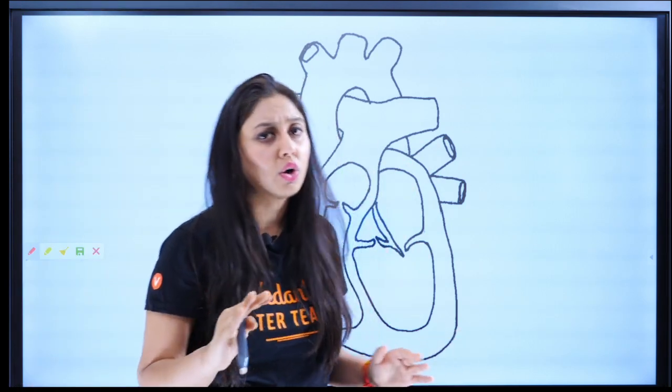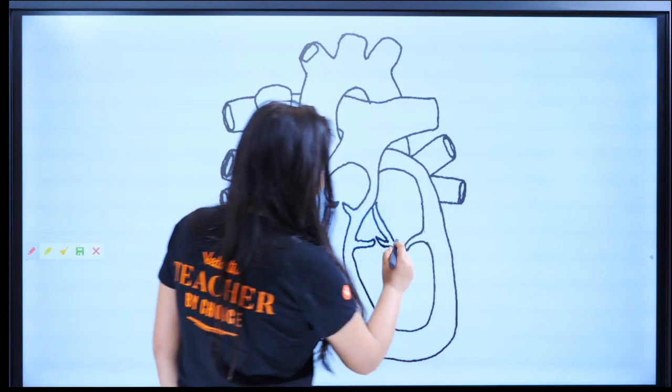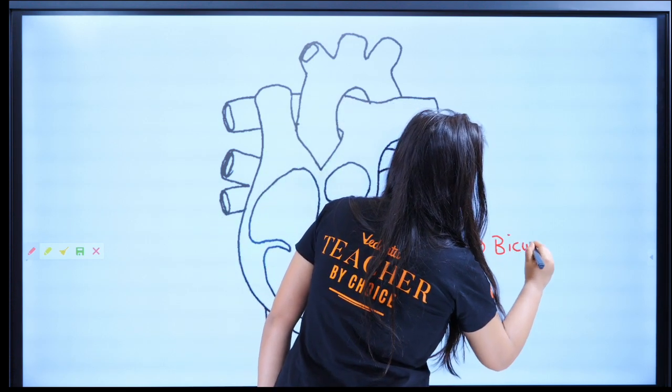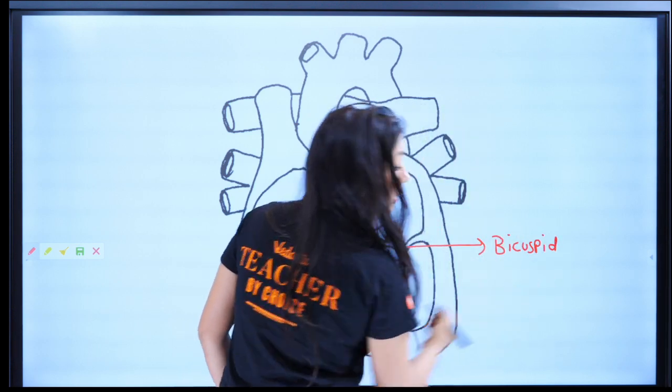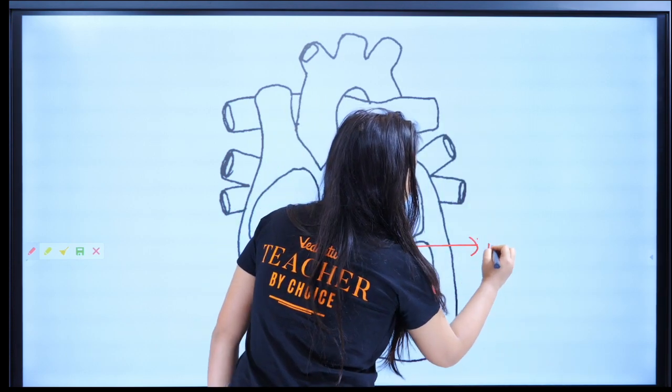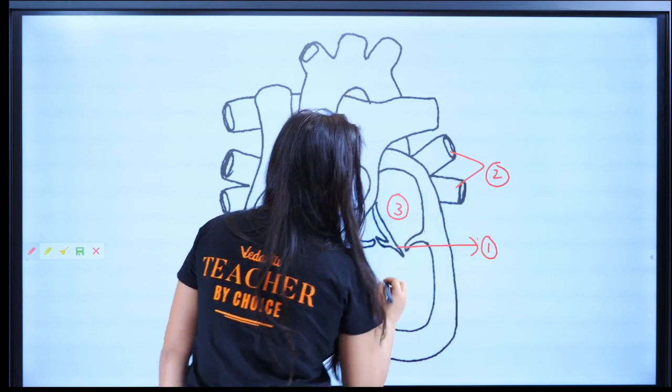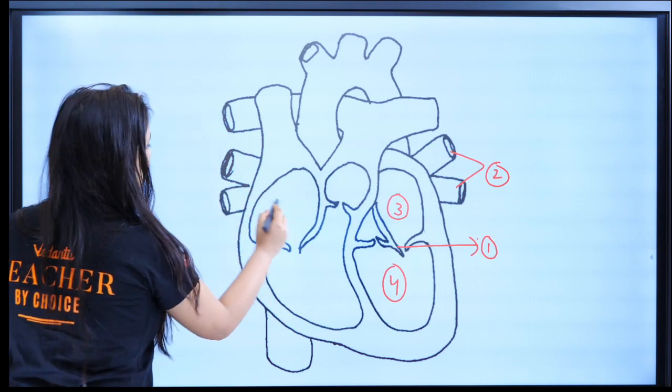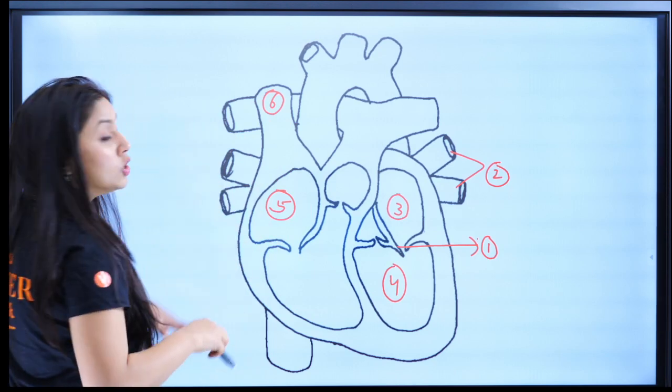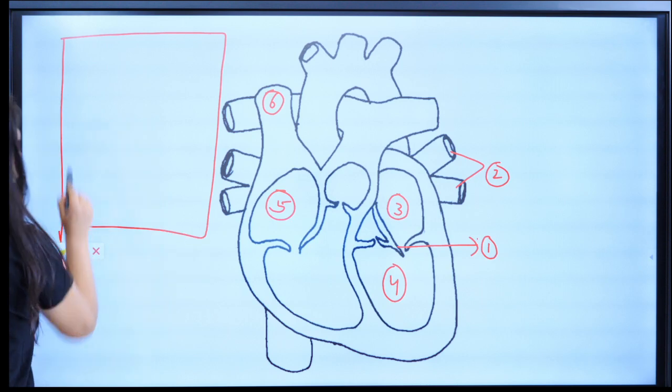Another thing what you can try is if you feel that there's too much hodgepodge happening, like suppose here you have labeled it that this is your valve, suppose this is your bicuspid valve, and here after that you have to do auricle also, then you feel there's too much hodgepodge. There is one way what you can try: you can number them. Number one, like suppose number two, this is number three, this is number four, maybe this is number five, this is number six maybe, you know.